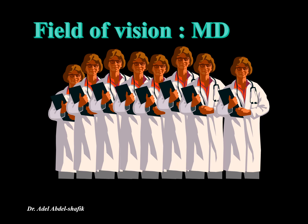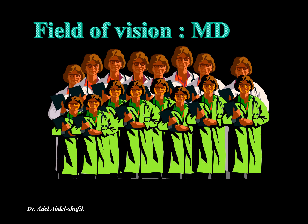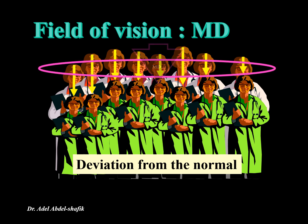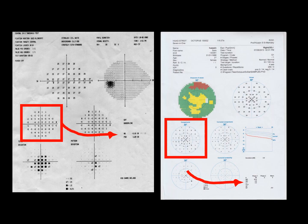What about the mean deviation? If this represents the normal field and these are the sensitivities of the different points of our patient, we want to know how much our patient deviates from the normal. We check each location, find the difference — values like 5, 6, 2, 1, 2, and so on — and calculate the mean of all these differences. That is the mean deviation.